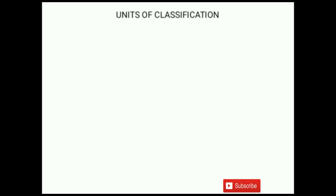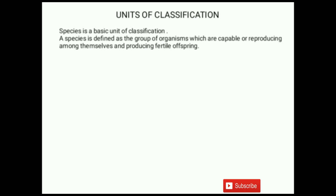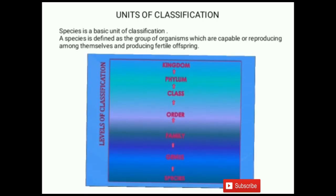Now we will discuss the units of classification. Species is the basic unit of classification. A species is defined as the group of organisms which are capable of reproducing among themselves and producing fertile offspring. Now see the picture — it shows the levels of classification. Species are grouped into genus, genus into family, family into order, order into class, class into phylum, and phylum into kingdom.